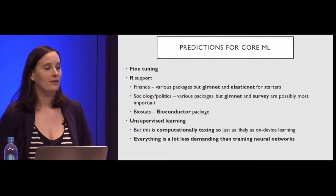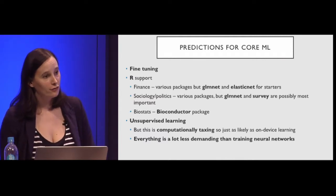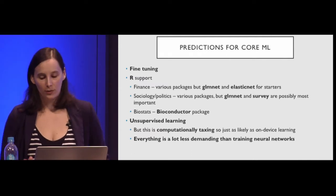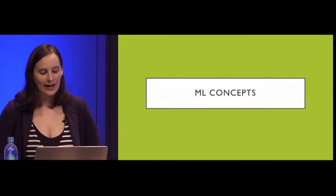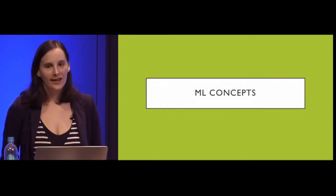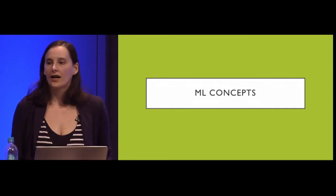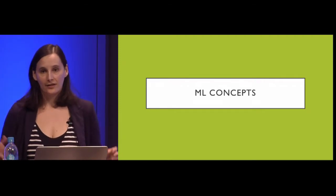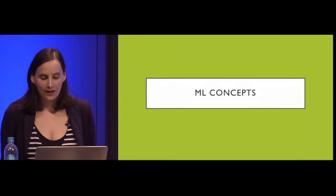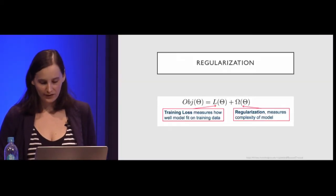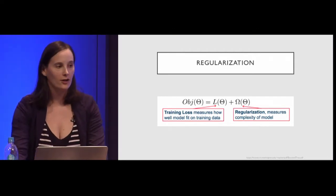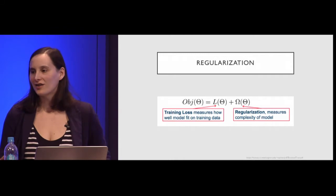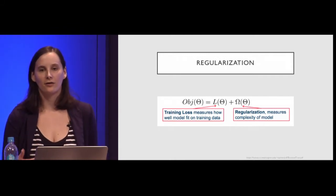Unsupervised learning is computationally taxing, so it's likely something Apple will address one way or another. One thing to keep in mind: everything is less demanding than training neural networks, so you can still make a lot of progress in other less-sexy areas because the computation is so much smaller. I also want to walk you through some machine learning concepts. I'm guessing most people here have not done a lot in this area, but it's about to descend on you professionally one way or another.